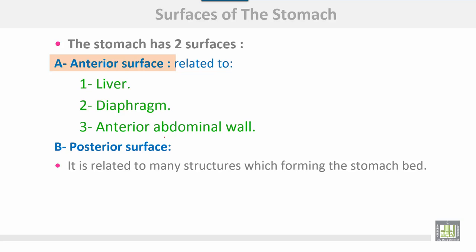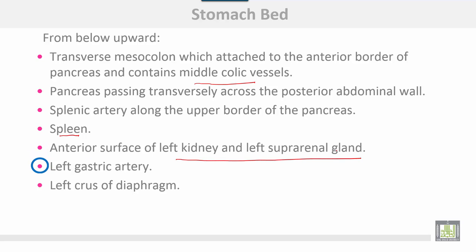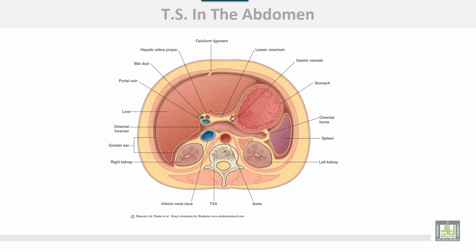The stomach has two surfaces. The anterior surface is related to the liver, diaphragm, and anterior abdominal wall. The posterior surface is related to many structures forming the stomach bed. The stomach bed is formed from below upwards: the transverse mesocolon, which attaches to the anterior border of the pancreas and contains the middle colic vessels; the pancreas passing transversely across the posterior abdominal wall; the splenic artery along the upper border of the pancreas; the spleen; the anterior surface of the left kidney and left suprarenal gland; the left gastric artery; and the left crus of the diaphragm. In the transverse section shown, this is the spleen, this is the stomach, this is the posterior surface of the stomach, and this is the anterior surface related to the liver.